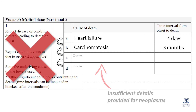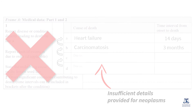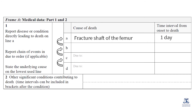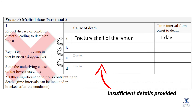For deaths due to neoplasms, additional details are required which certifying doctors often leave out. Different neoplasms of the same organ may have different etiologies and prognoses, which may be helpful in planning specific interventions. Reporting the site, behaviour and morphology of neoplasms provides optimum information for use by policymakers. When certifying deaths from injuries, poisonings or other external causes, the circumstances of the accident or violence should be reported as the underlying cause of death, not the injury.